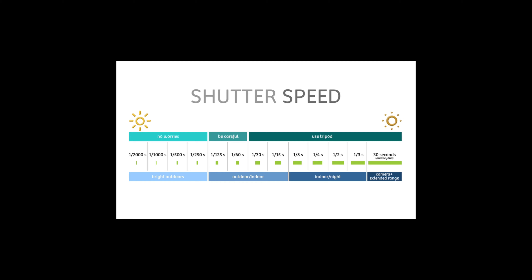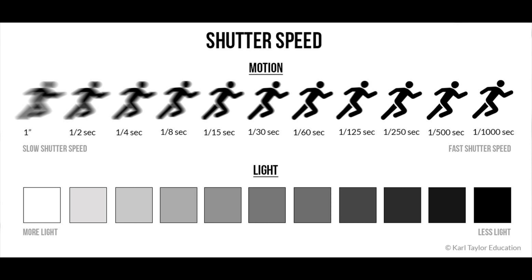Shutter speed is the length of time that light is being brought into your camera. Shutter speed is measured as 1 over a number — the lower that number, the more your picture is going to be blurry. So if you're taking a picture of a car driving by, you don't want a shutter speed of 1/2. You'd want 1/500 or 1/1000 to freeze the motion. The higher your shutter speed, the more in focus your moving object will be.